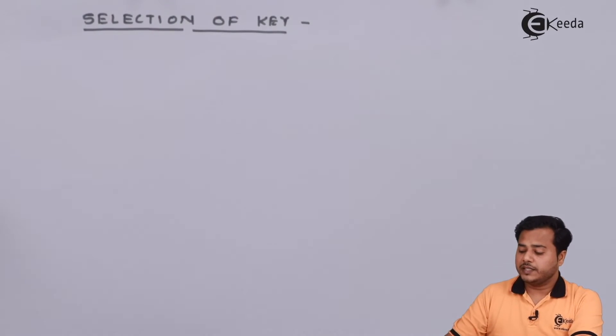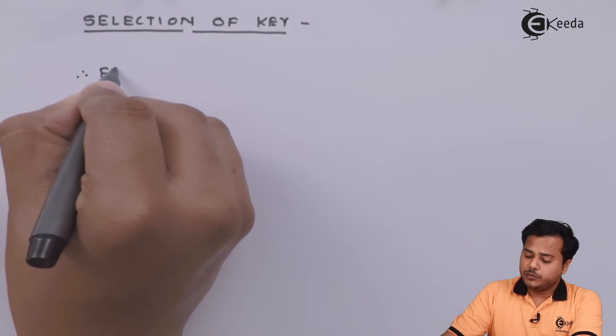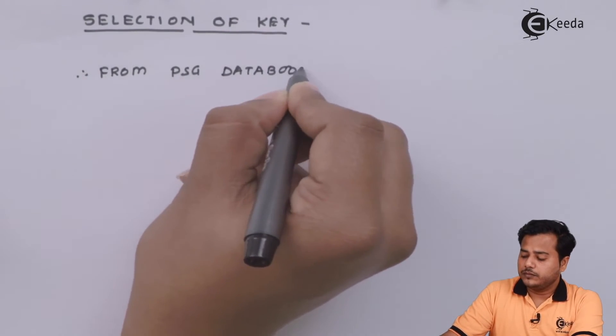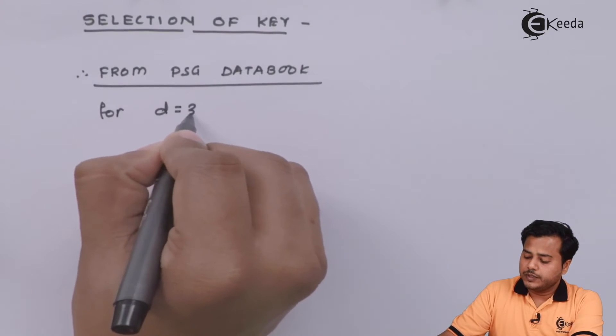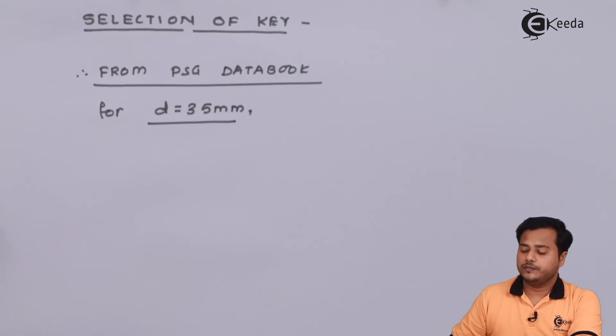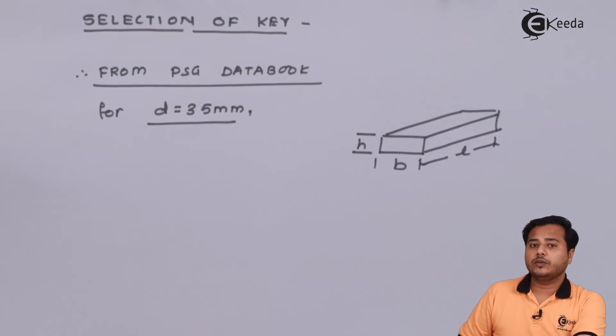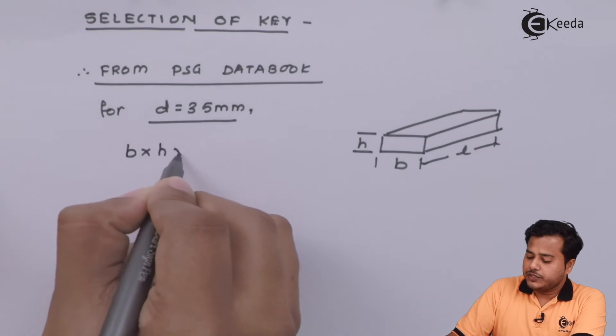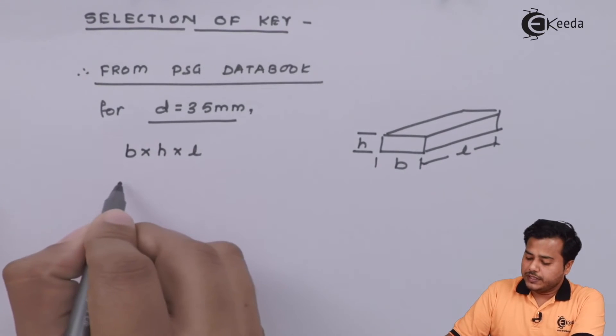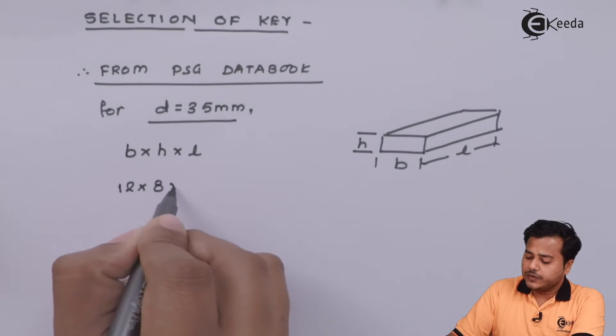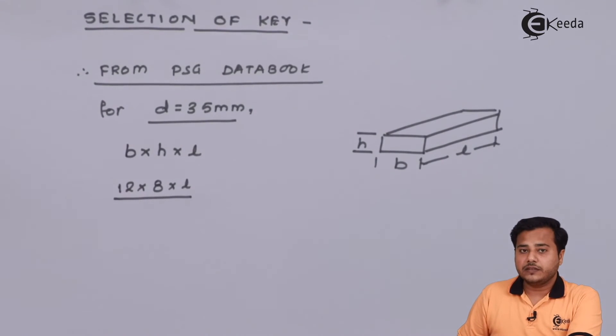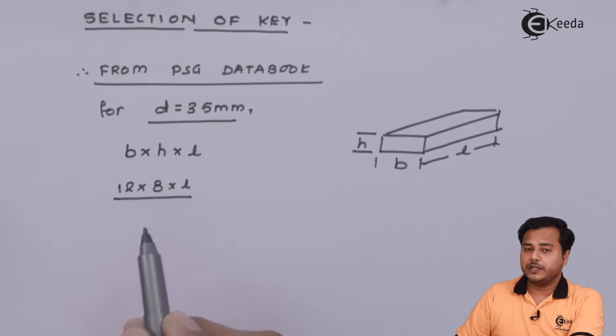The next immediate thing is selection of key. From PhD data book, for diameter 35 millimeter, we know how shaft is designated. Let us select a standard value designated with b×h×l. We know that b is 12, h is 8, versus length. Length can be same as that of shaft or smaller. We can figure out the length parameter afterwards.